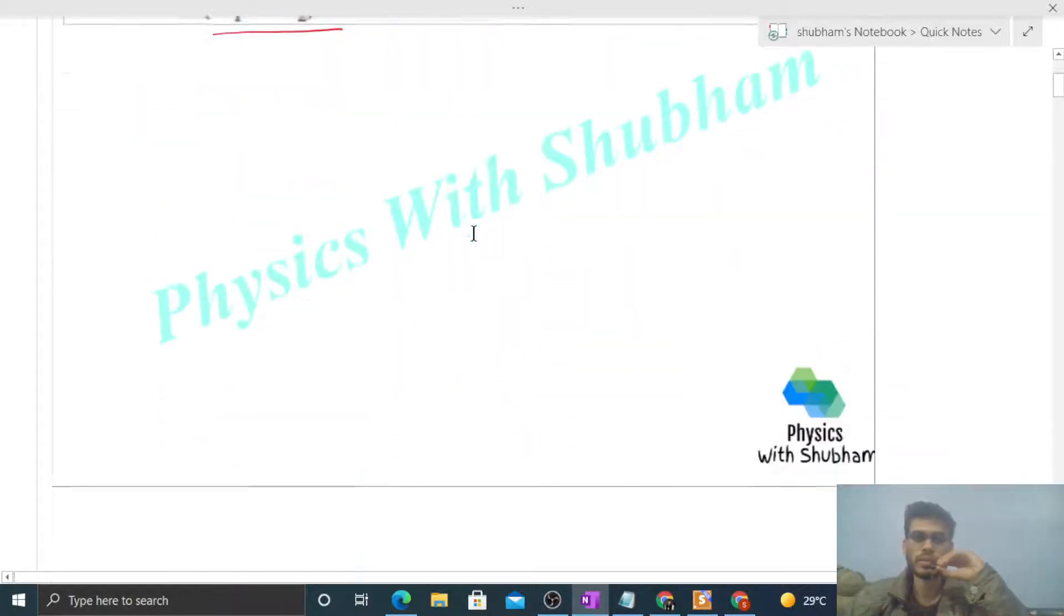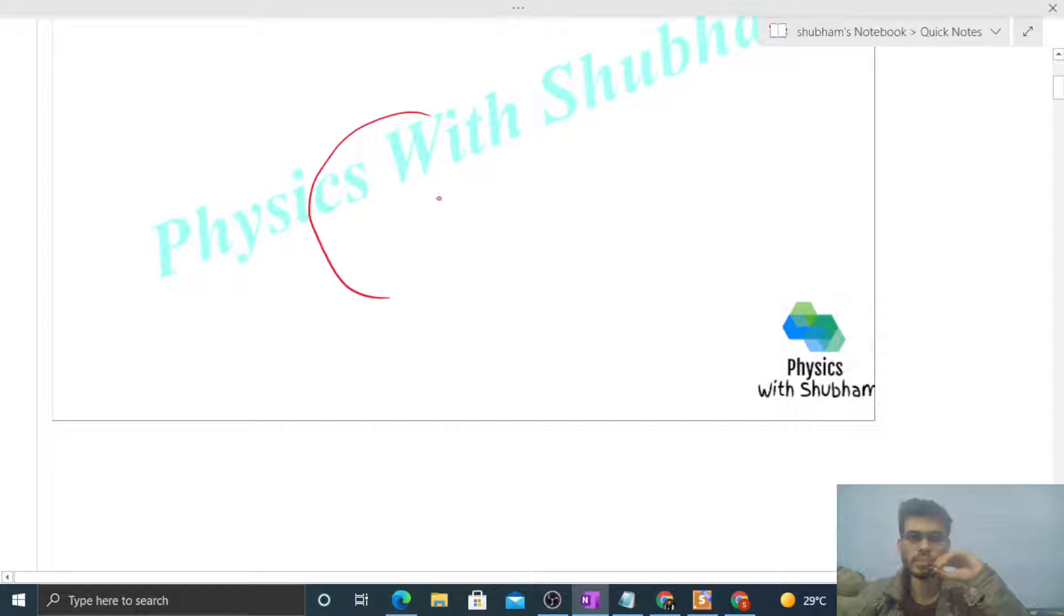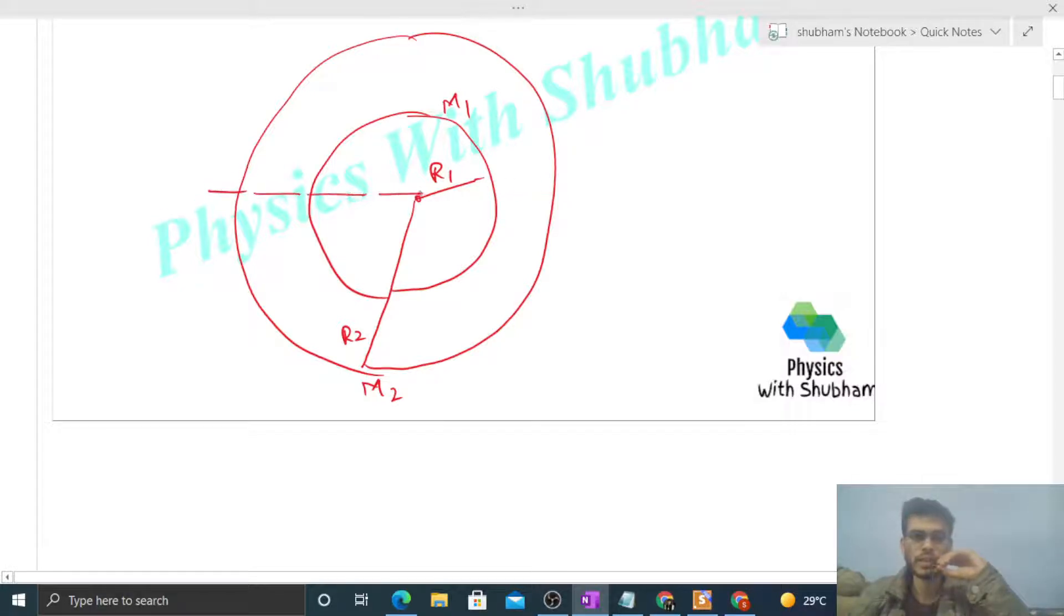So we have concentric shells something like this. The inner shell has radius R1 and mass M1. The outer shell has radius R2 and mass M2. And we have a particle of mass small m at a distance (R1 + R2)/2 from the center.